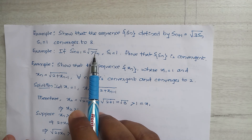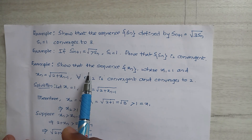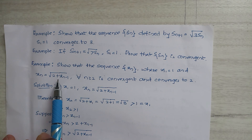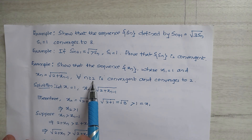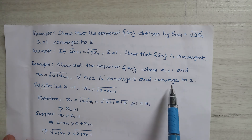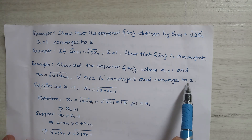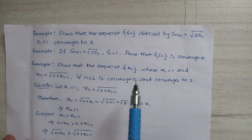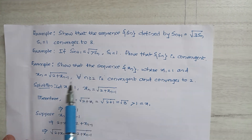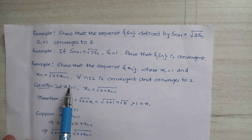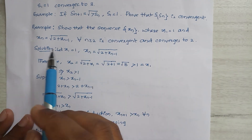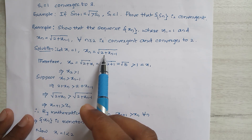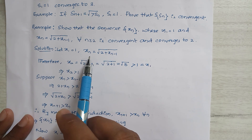Next example: show that the sequence xn, where x1 = 1 and xn = √(2 + xn-1) for all n ≥ 2, is convergent and converges to 2. These examples are similar in type — x1 is given and xn is defined recursively. Solution: let x1 = 1 and xn = √(2 + xn-1) as given data.